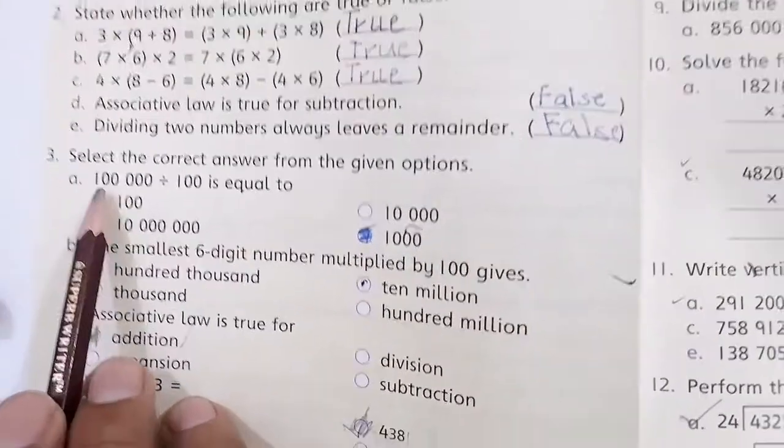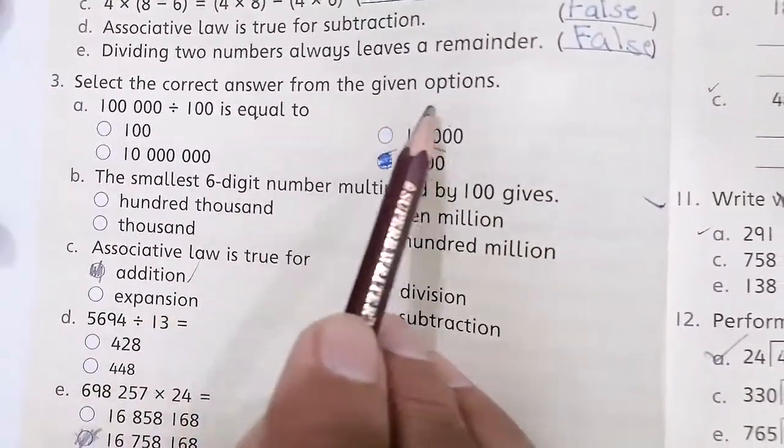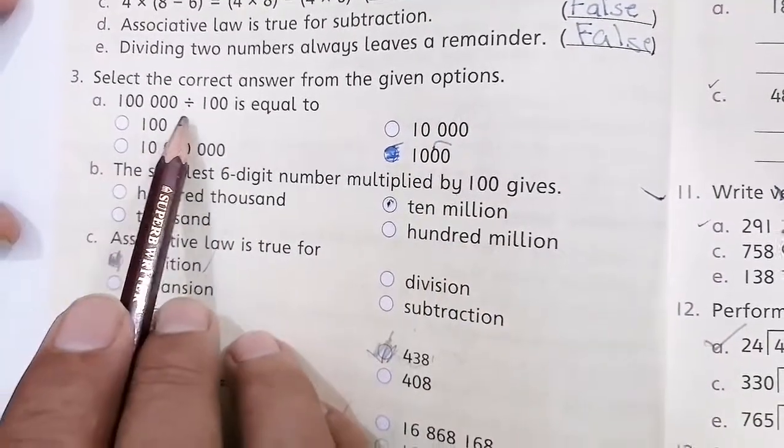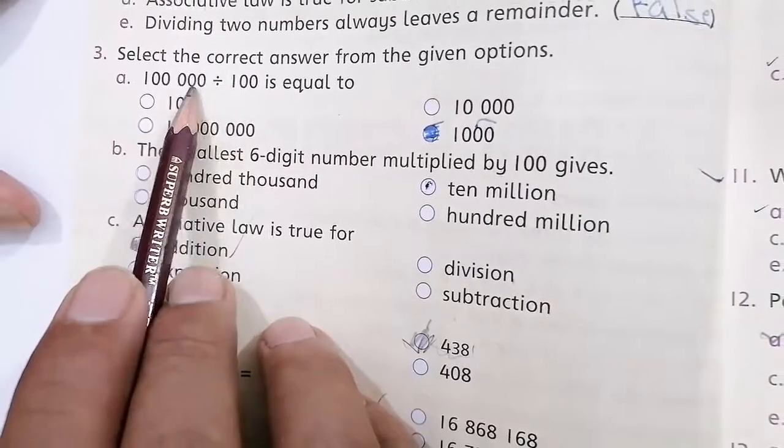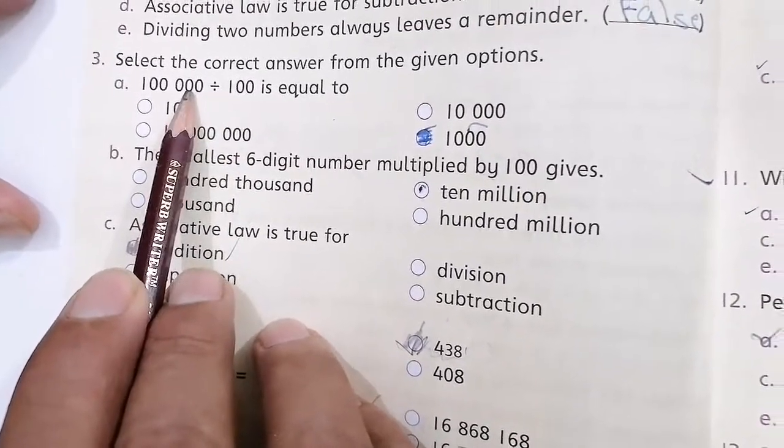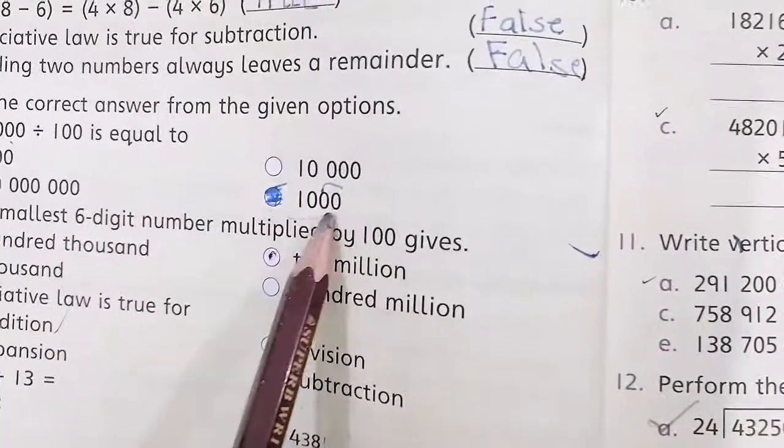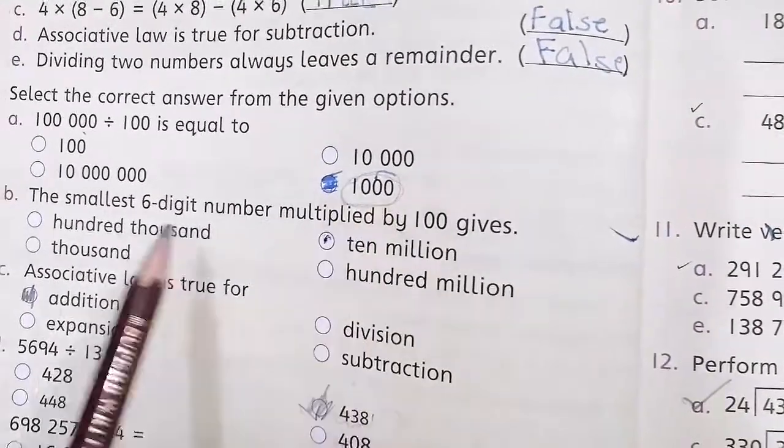Question number 3, select the correct answer from the given options. 100,000 divided by 100, if you divide by 100, then you will have 1000. So this fourth option is correct.